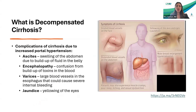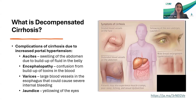When patients develop those complications, this is what we call decompensated cirrhosis. Ascites is when fluid builds up in the belly, causing swelling. Encephalopathy is when toxic metabolites develop in the body, and the buildup of these toxins causes confusion. Patients develop varices — big blood vessels in the esophagus and stomach — that can cause severe internal bleeding. And jaundice, or yellowing of the eyes and skin, is related to dysfunction in the liver.